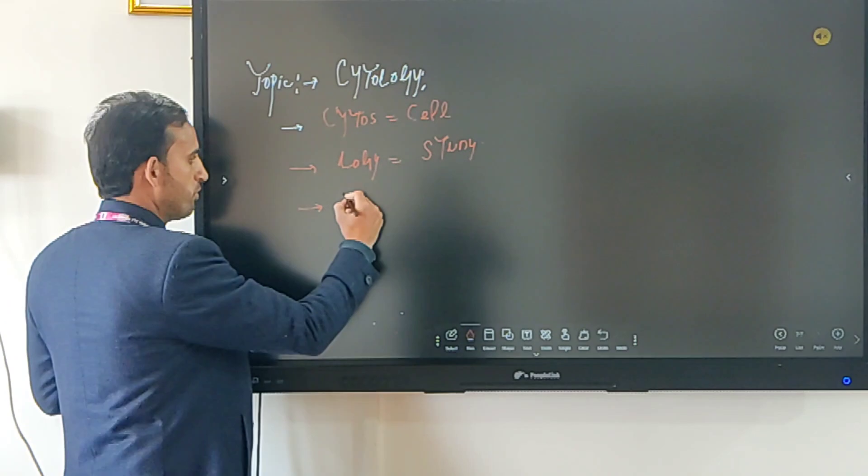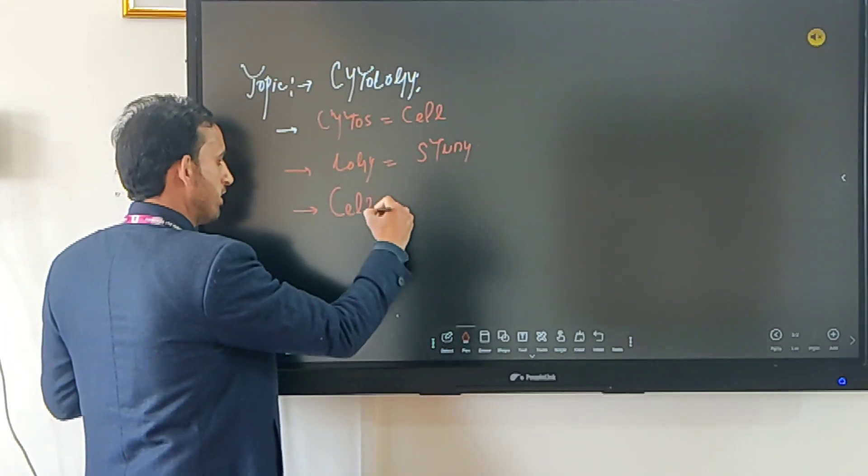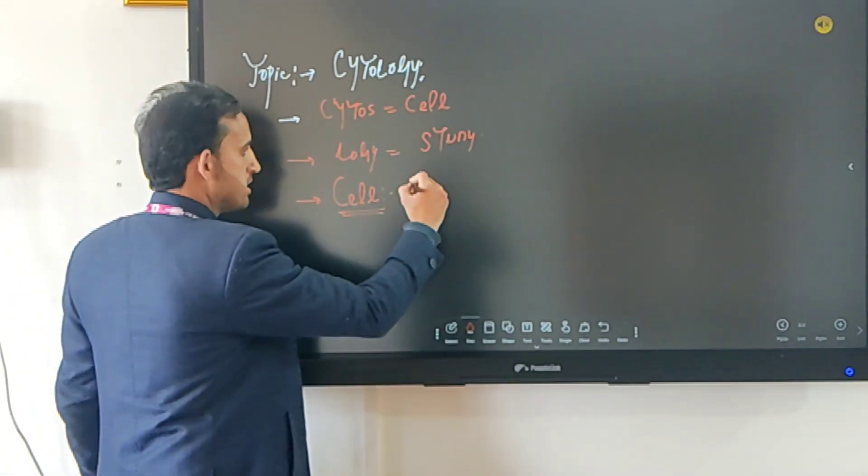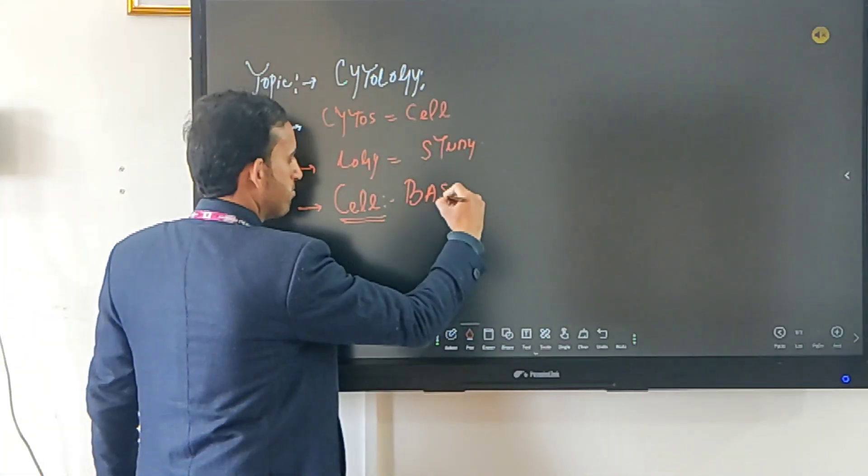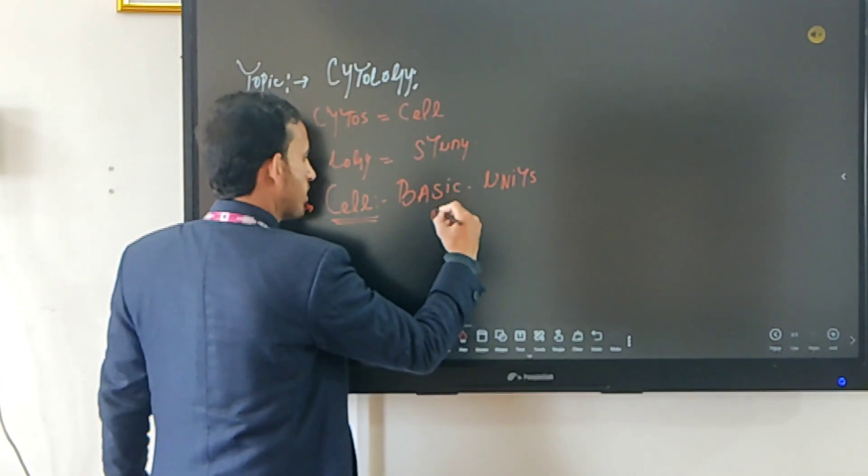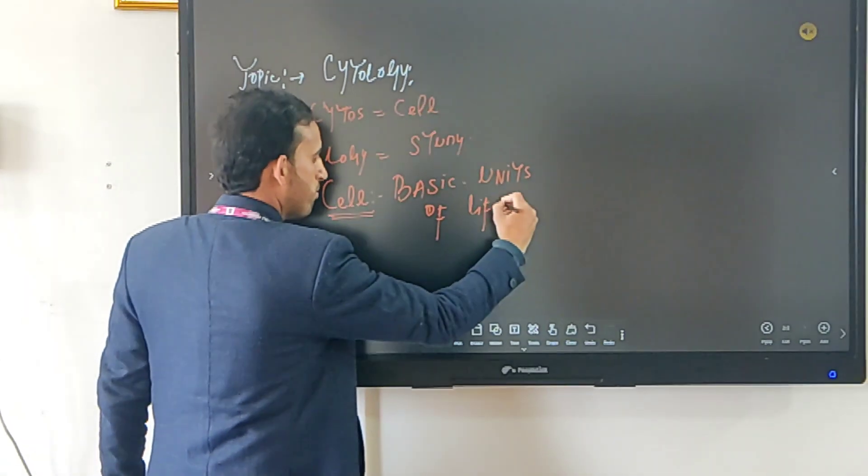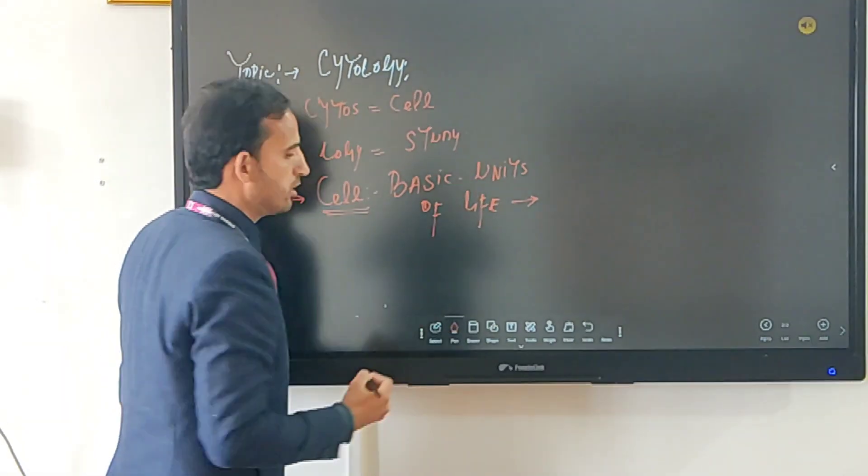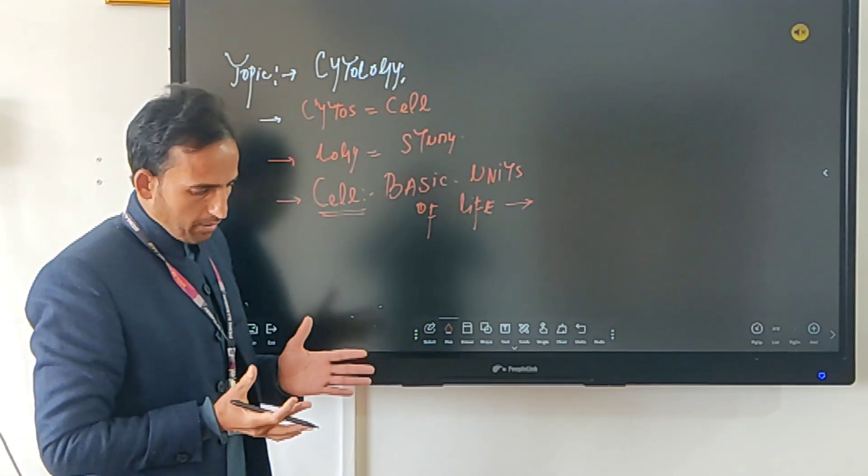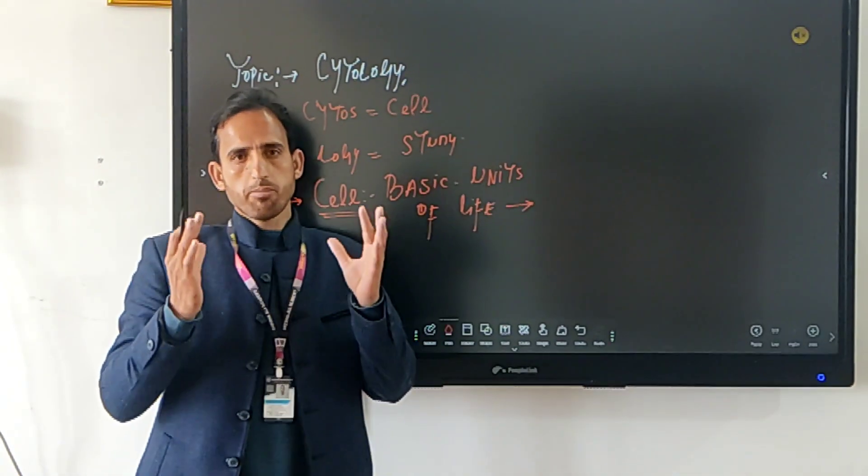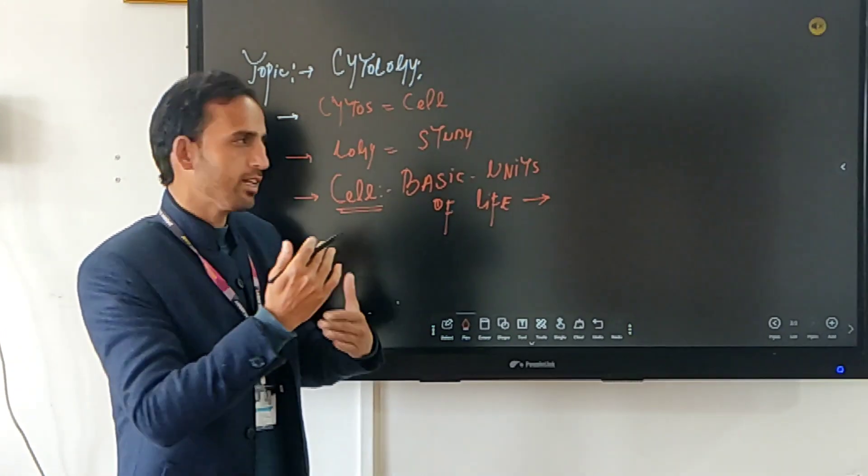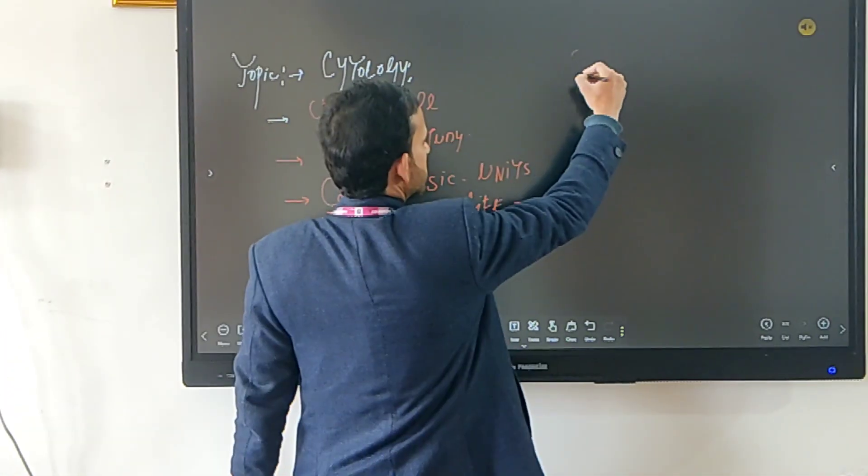Now first of all, we will look at what cells actually are. Cells are simply defined as basic units of life. What does that mean? It means the survival of life is dependent upon the cells. Because if we look towards our body, our body is composed of cells. These cells later on get combined and they form another very important structure.